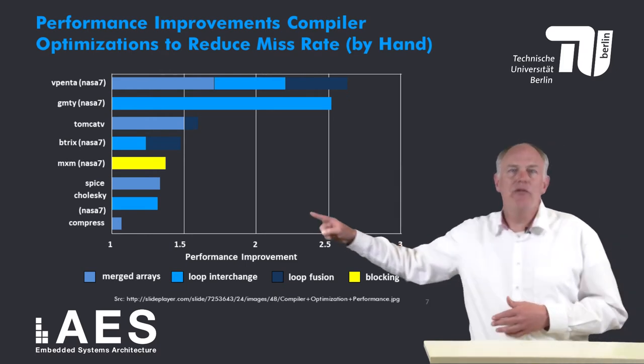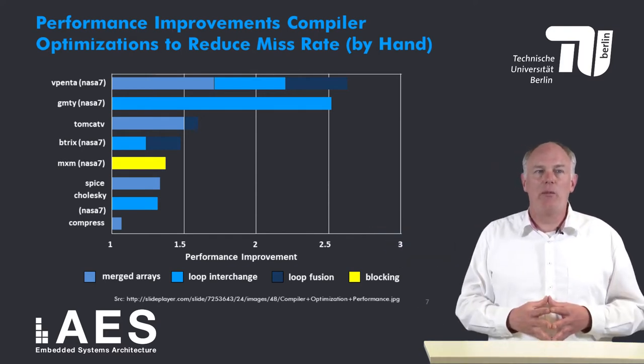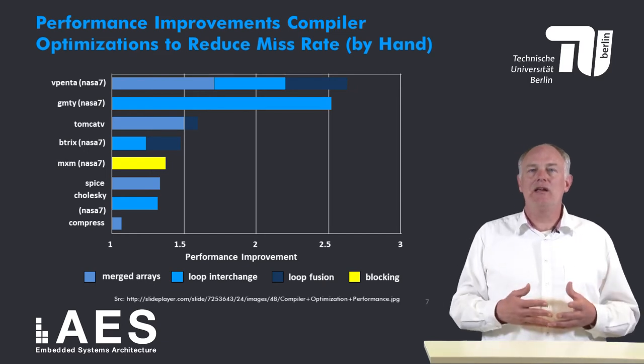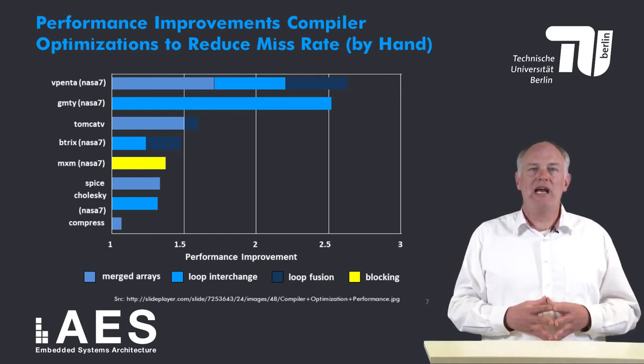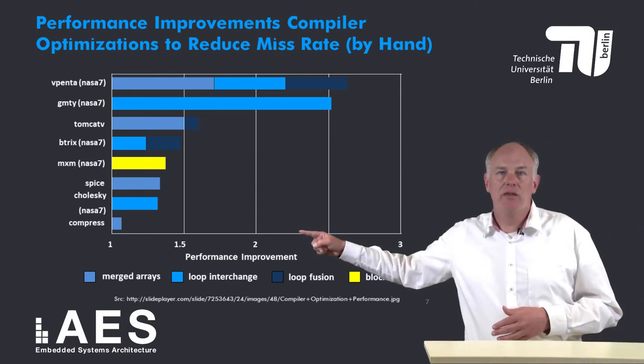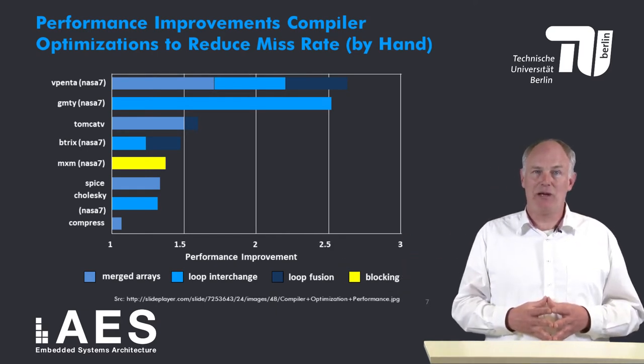Furthermore, the different colors indicate the optimizations that cause the improvements. Merging arrays, loop interchange, and loop fusion all improve the performance of VPENTA, but the other benchmarks are accelerated by only one or two techniques. Blocking only benefits the NASA 7 benchmark M times M, which in fact is matrix multiplication.